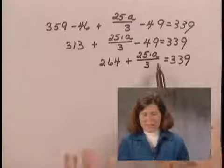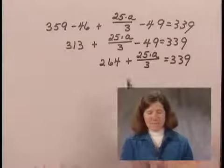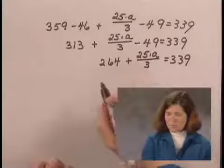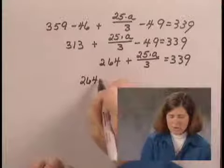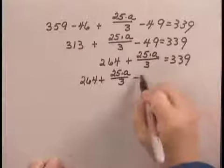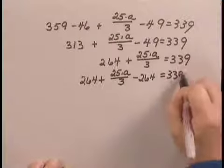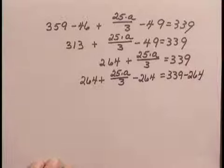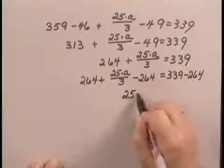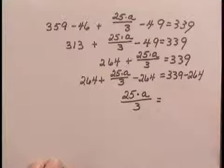Now, I can't really simplify the left side of the equation any farther, but I can subtract 264 from both sides. And I'm going to do that: subtracting 264 plus 25 times A over 3 minus 264 equals 339 minus 264. And on this side now, I just have the one expression that has the variable in it, 25 times A divided by 3. And on the right side, I have 75.